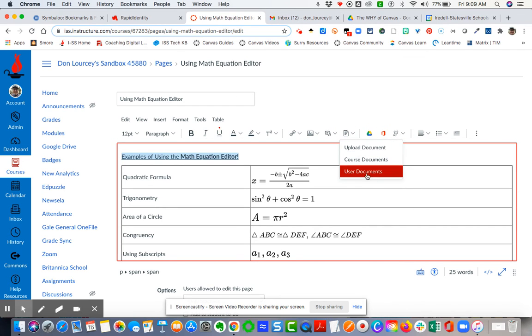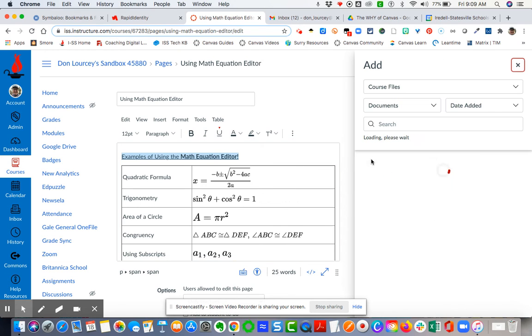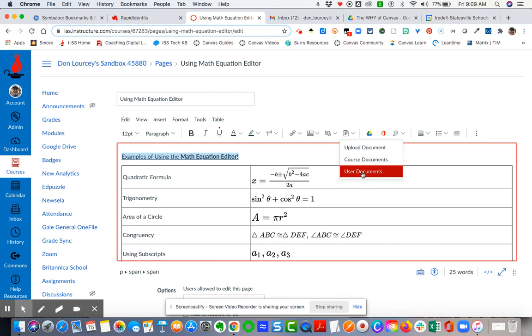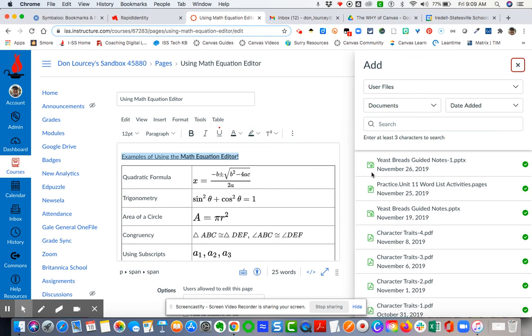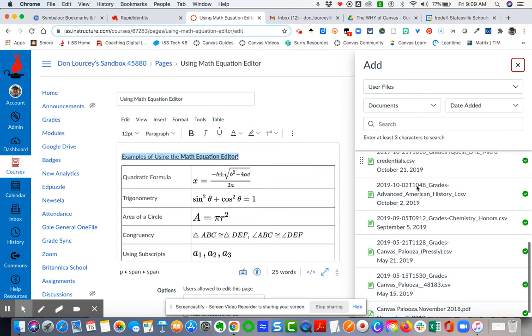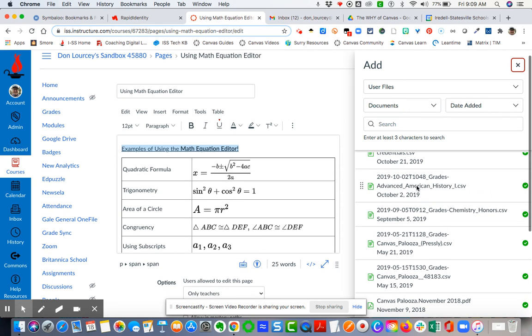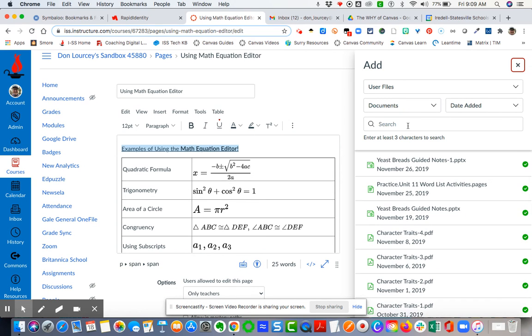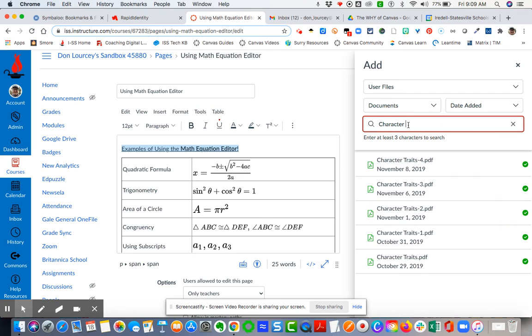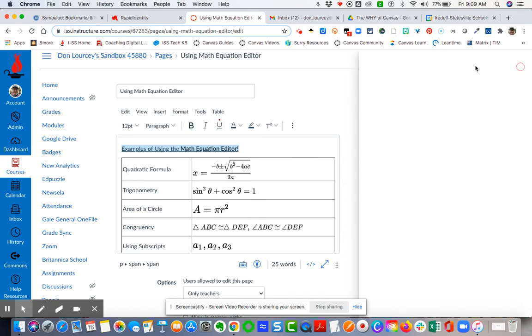You can do the same thing for course documents, user documents. Course documents are the documents that are specifically in the course. You can see that I only have two. Then you can look here for user documents, which pulls up all of my documents from all of my files that I've uploaded, and so I can do a search here of all of the documents, for instance, that relate to character traits.